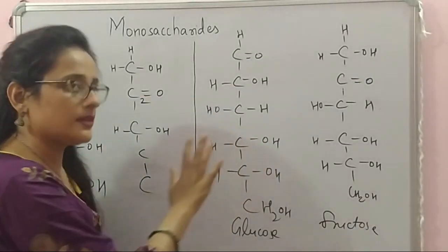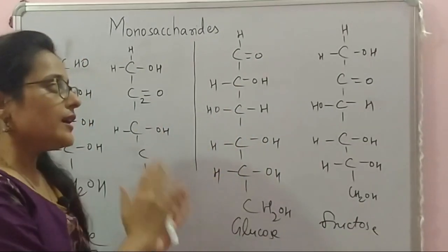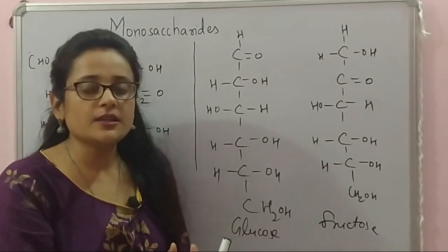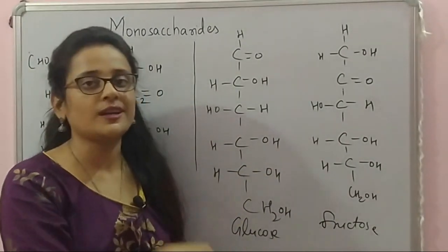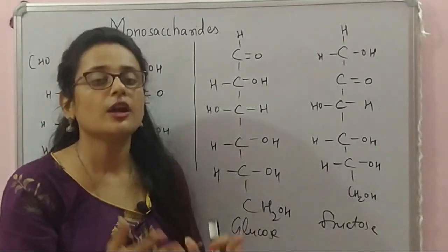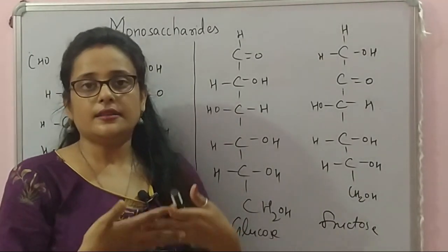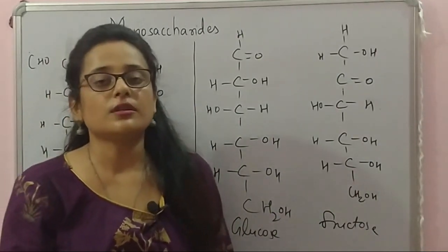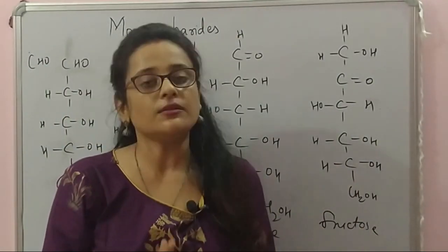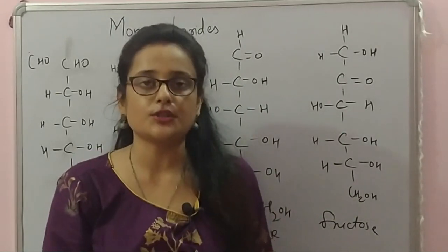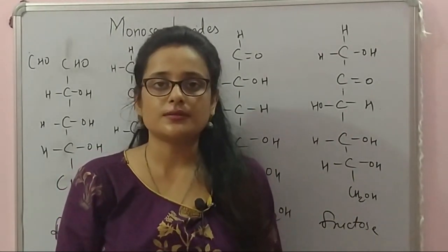The structures we have drawn so far are open chain structures. They can also be found in cyclic structures. We will see how to convert an open chain monosaccharide into a cyclic monosaccharide and what the difference is between them. In the next lecture, we will talk about the properties of monosaccharides, and in the third lecture we will cover open chain and cyclic structures. With this, we come to the end of this video. Thank you for watching.